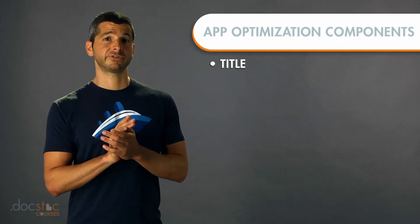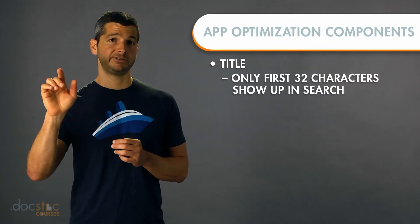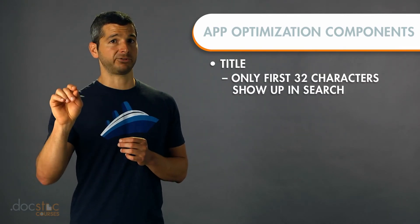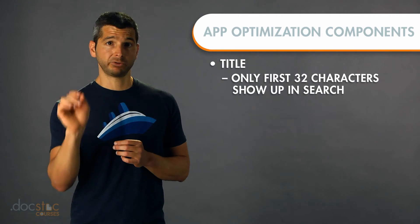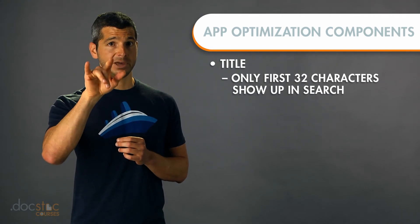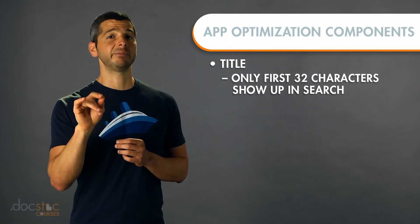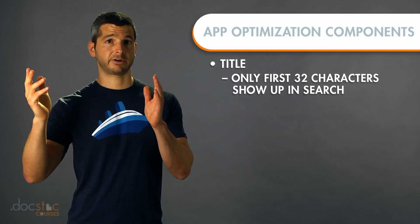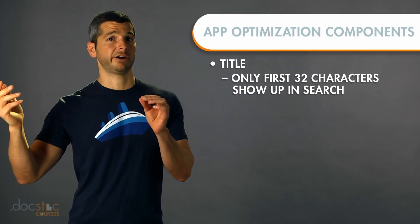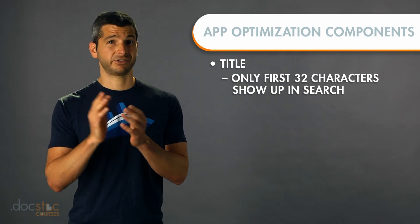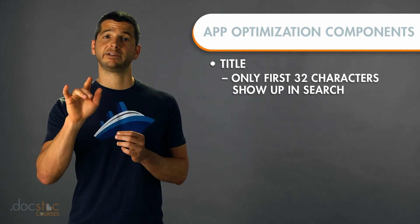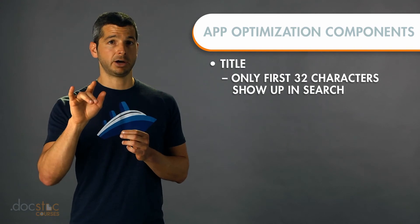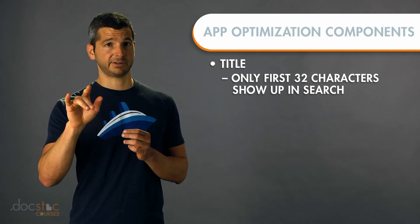Most importantly, to get found, let's talk about the title and keywords. When you search for an app, only the first 32 characters show up in the app results, so make sure those first 32 characters are good. That doesn't limit you to 32 characters — there are apps with up to 100 characters that perform just as well. So you're going to need to test out and figure out your ideal title length, and that will take some testing.